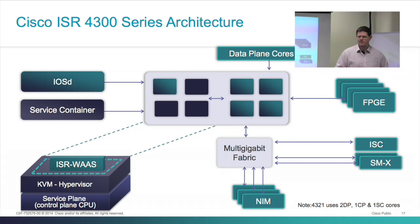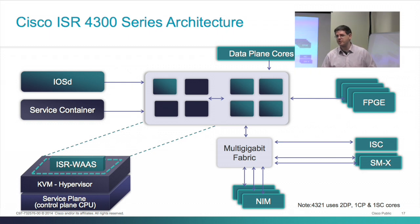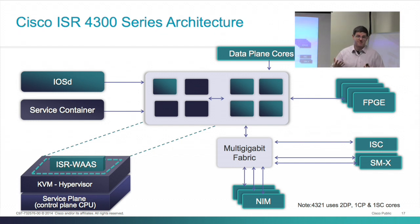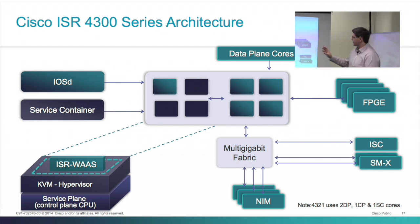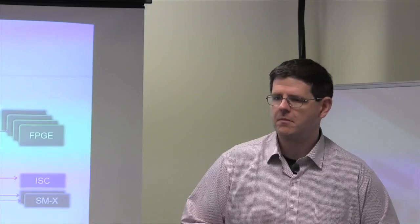The 4300 series has a slightly different internal architecture. The 4331, for example, only has one heat sink because it uses a single multi-core Intel x86 chip — a Gladden chip — giving you eight CPU cores. Four of those are for the data plane at maximum performance; three are for services and one for control. Other than that, the software is the same and the packet flow is exactly the same.